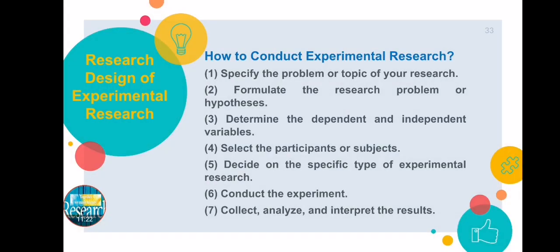In the research design of experimental research, there are seven steps to be conducted. One: specify the problem or topic of your research. Two: formulate the research problem or hypothesis. Three: determine the dependent and independent variables. Four: select the participants or subject. Five: decide on the specific type of experimental research. Six: conduct the experiment. Seven: collect, analyze, and interpret the results.